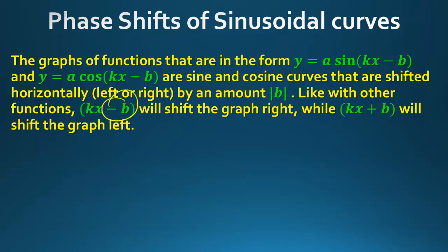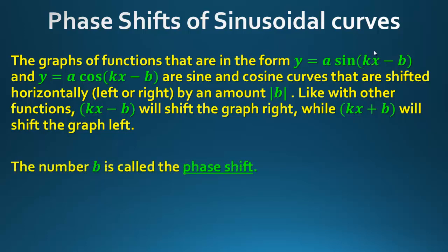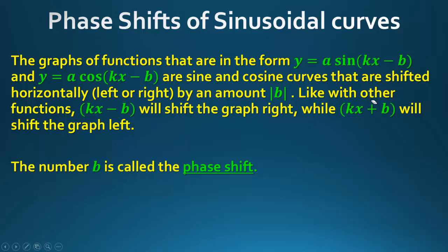When you have a coefficient in front of x, you need to factor it out. The value b is called the phase shift — it can be positive or negative. Minus b gives a negative phase shift; plus b gives a positive phase shift. Just like other functions, since x is being affected, it does the opposite of what you'd expect.